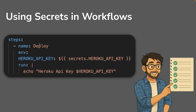Now let's see how to use a secret in your workflow. Here's an example step: to access the value of the secret and assign it to a variable, add the dollar sign followed by double curly braces, then 'secrets.' followed by exactly the name of the secret — in this case, 'HEROKU_API_KEY'. Close the curly braces, and now this value is available as a variable in your workflow steps.